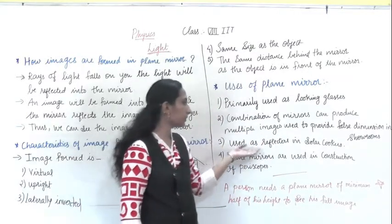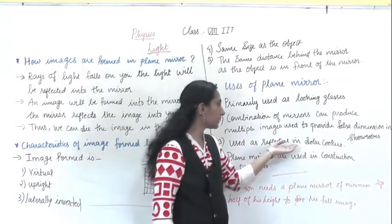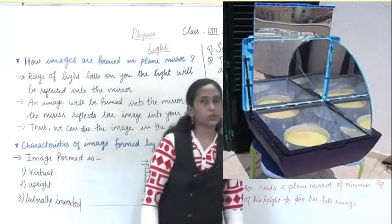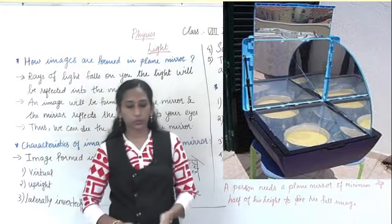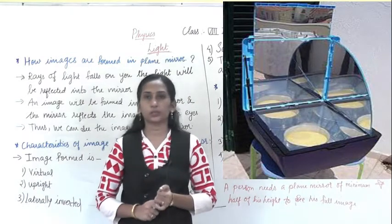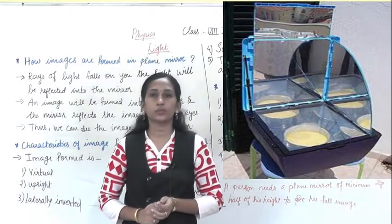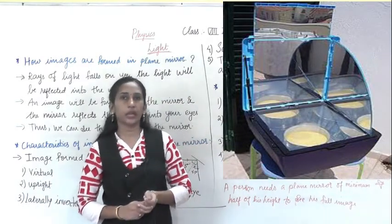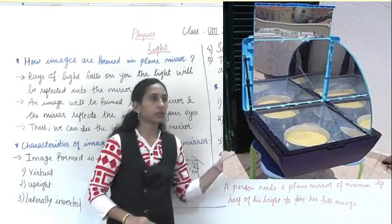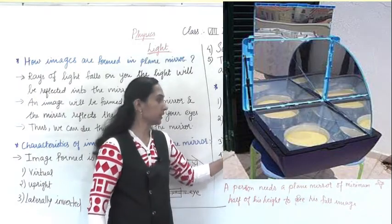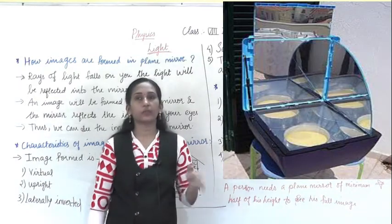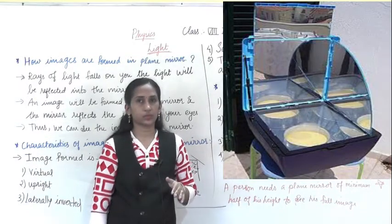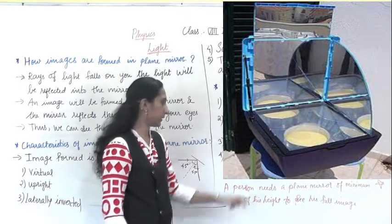The third use is that plane mirrors are used as reflectors in solar cookers. Solar cookers work on solar energy, and in them the plane mirror is used as a reflector.